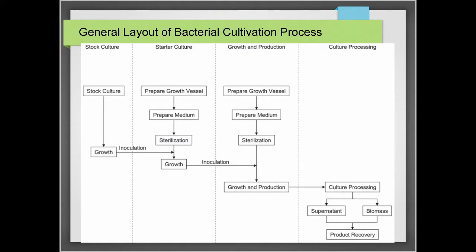Why do we need a starter culture? Because when you do industrial scale fermentations, you are dealing with tons — kilotons of culture medium. You cannot start your fermentation with just a spoonful of microorganisms. You need a certain population of microorganisms as a starter. So from your stock culture, usually kept in the laboratory, you grow it into progressively larger batches until you reach your desired population size, and that is what you pitch into your production bioreactor.